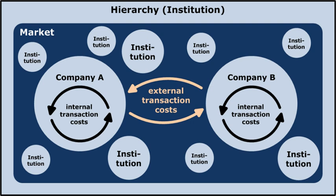Transaction costs can be divided into three broad categories. Search and information costs are costs such as in determining that the required good is available on the market, which has the lowest price, etc.